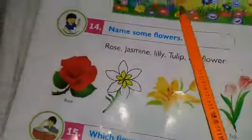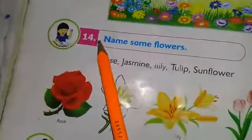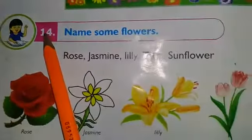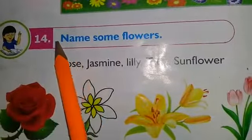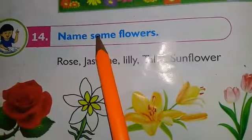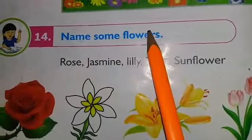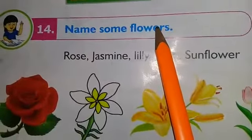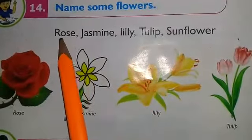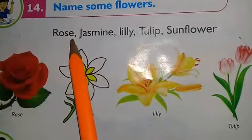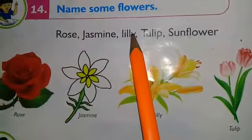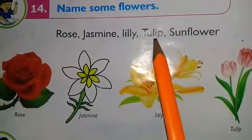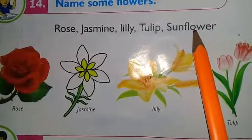First, I revisit the previous question, question number 14. Question number 14 is: name some flowers. The answer is: rose, jasmine, lily, tulip, sunflower.